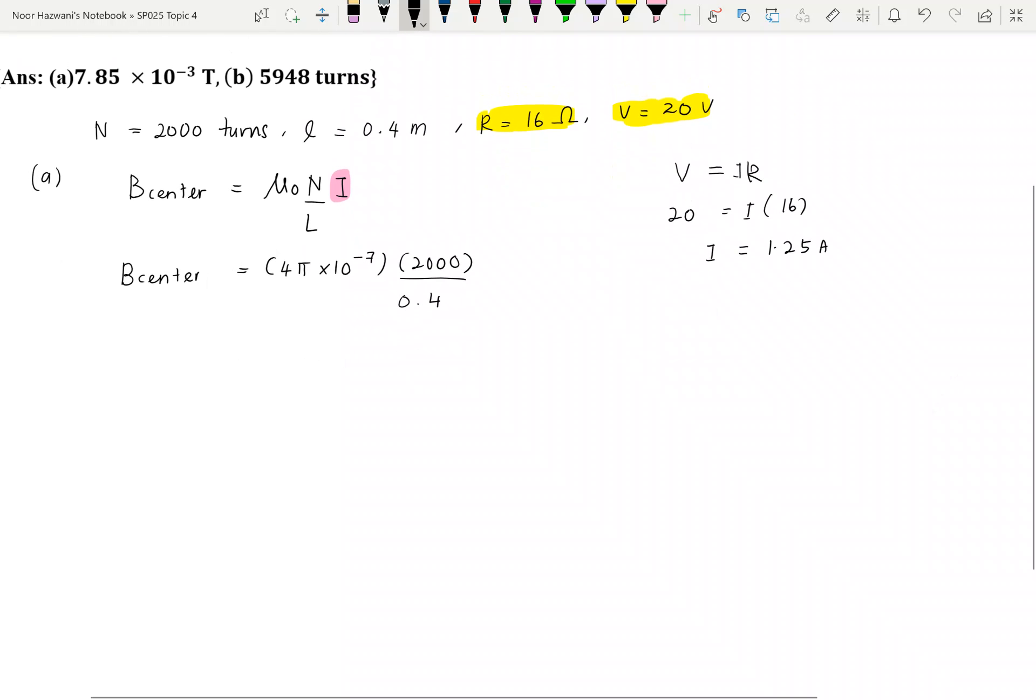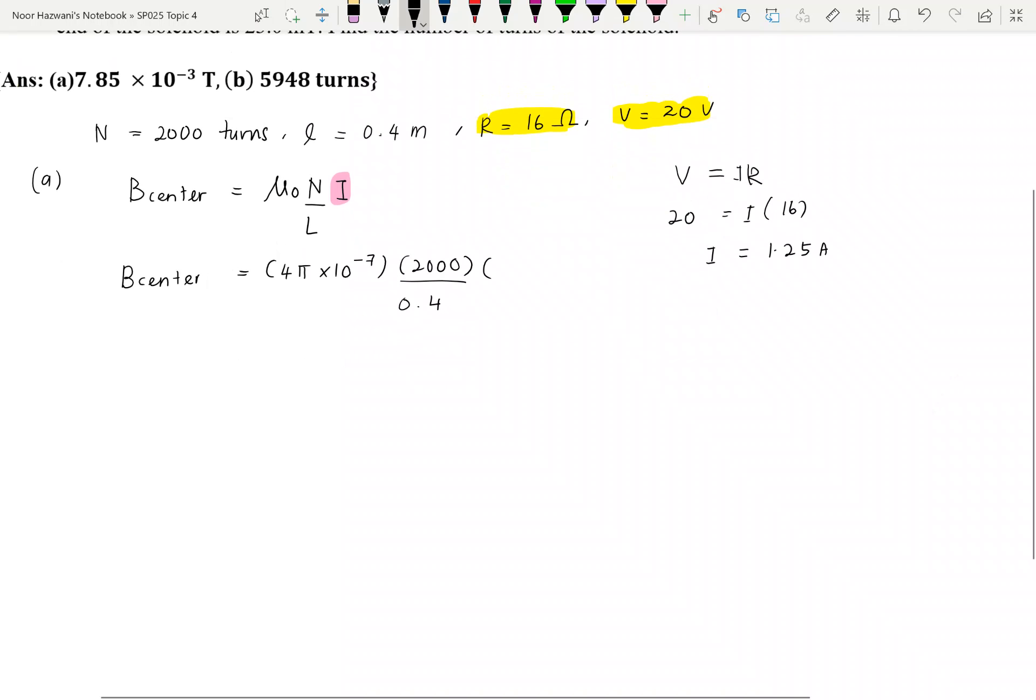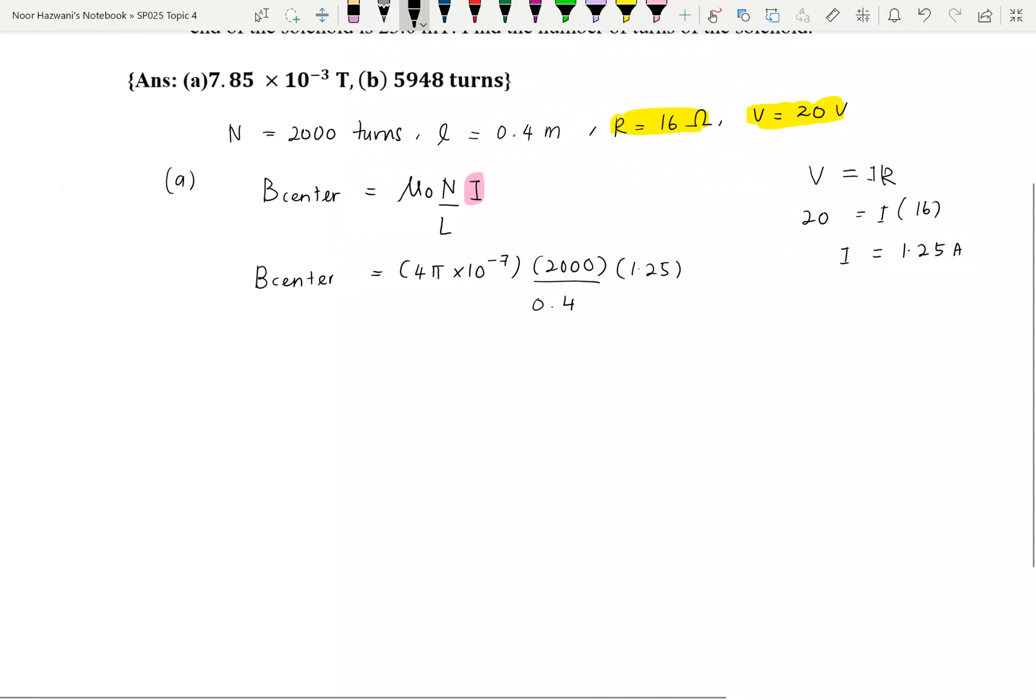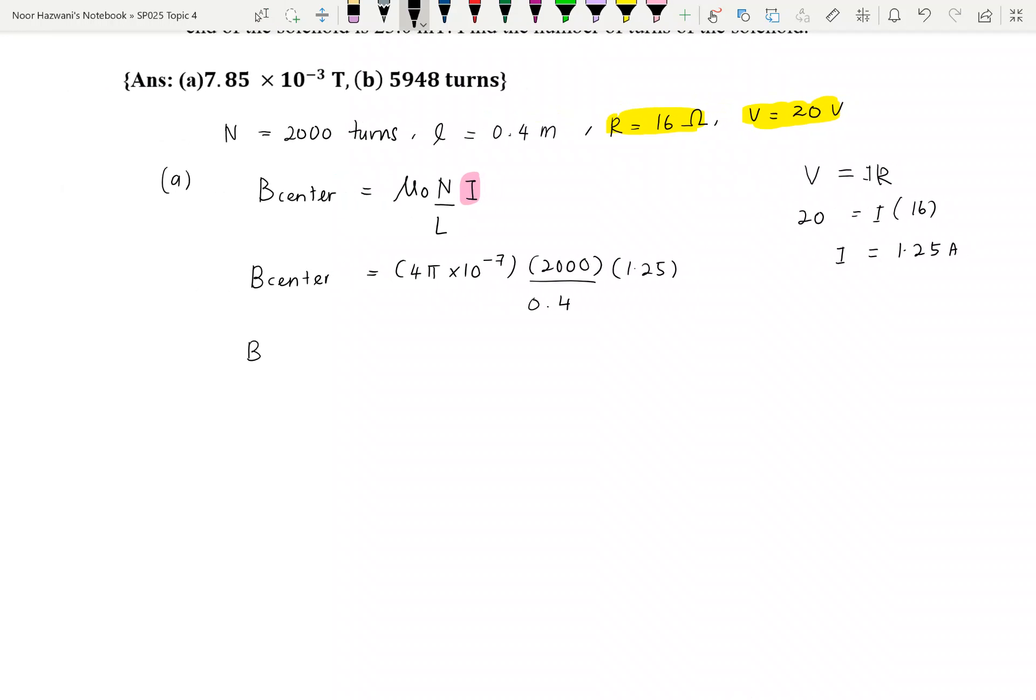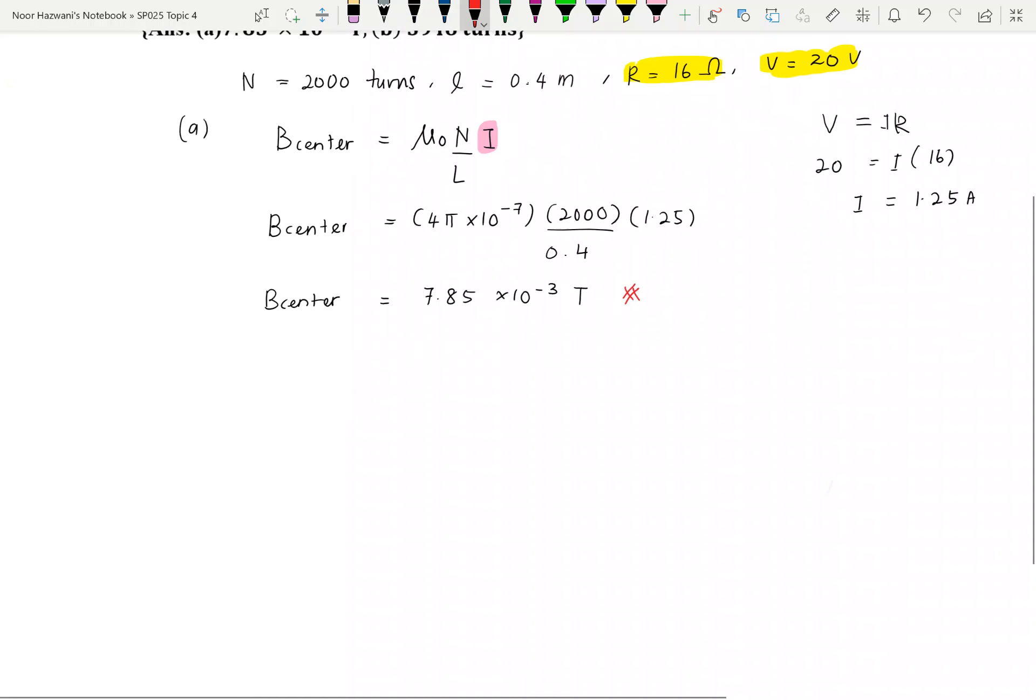Then you know the current. Therefore, we can plug in into the equation. Press your calculator. So you will end up your answer with 7.85 times 10 power of negative 3 Tesla. So that's the answer for part A.